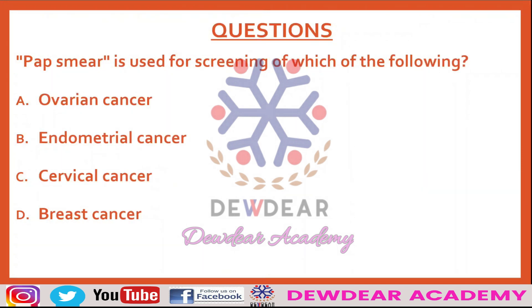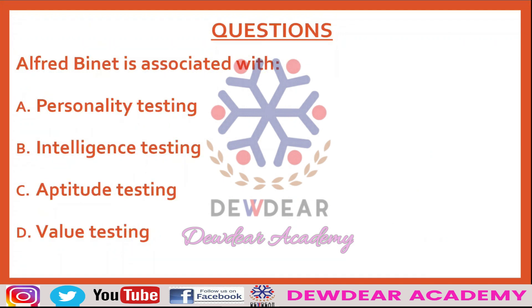Pap smear is used for screening of which of the following? Options are ovarian cancer, endometrial cancer, cervical cancer, breast cancer. Pap smear is used for screening cervical cancer.